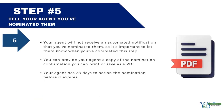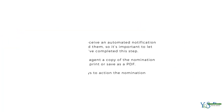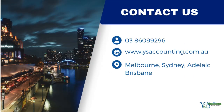Step five — let your agent know you have nominated them. The agent you nominate won't receive an automated system notification, so it's important that you let them know when you have completed the nomination step. Your agent has 28 days to action the nomination before it expires. If you experience any errors while completing the agent nomination, please contact the ATO on 13 28 66. Thank you for watching and I hope this information has been useful. If you have any questions, please don't hesitate to contact us. Thank you.